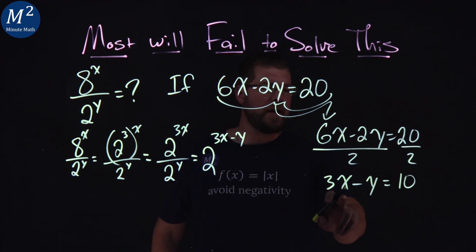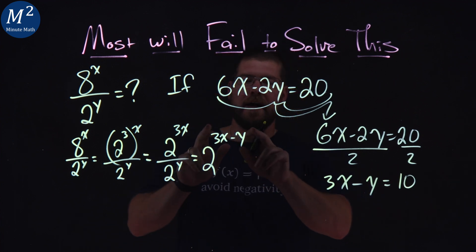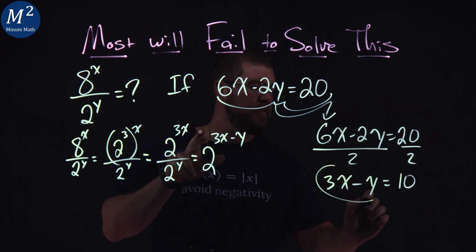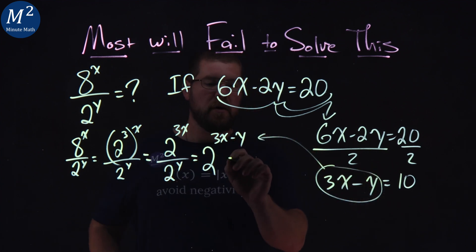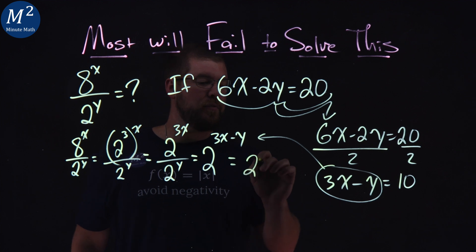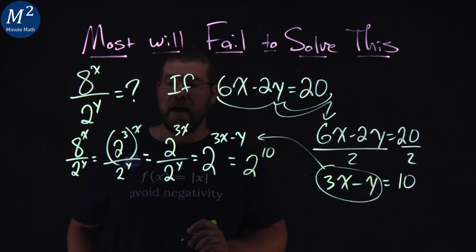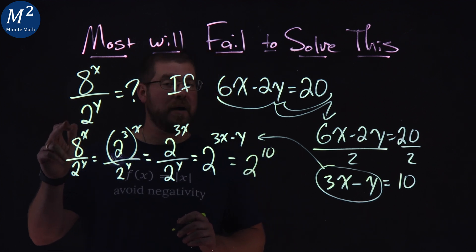Now notice this: 3x minus y is equal to 10, and we have that in the exponent. And this is where it all comes together. So we can rewrite this as 2 to the 10 power here. And again, that's equal to 8 to the x power over 2 to the y.